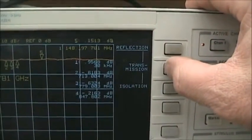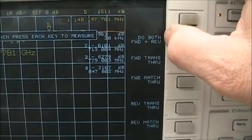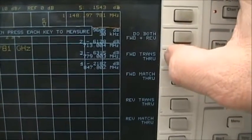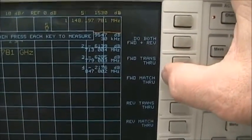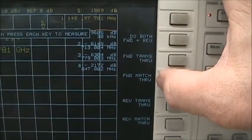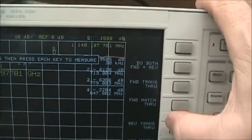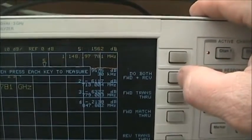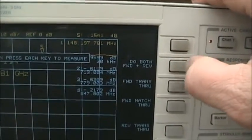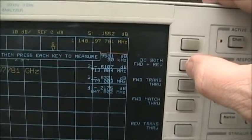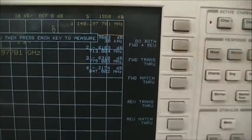Under transmission, we can do both forward and reverse. We can do a forward transmission, a forward through match, and a reverse version. Fortunately for us, all we need to do is connect a cable between ports one and two and press the do both button, and we'll be ready to go.